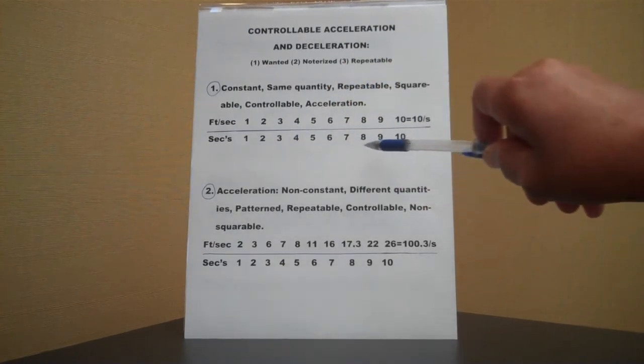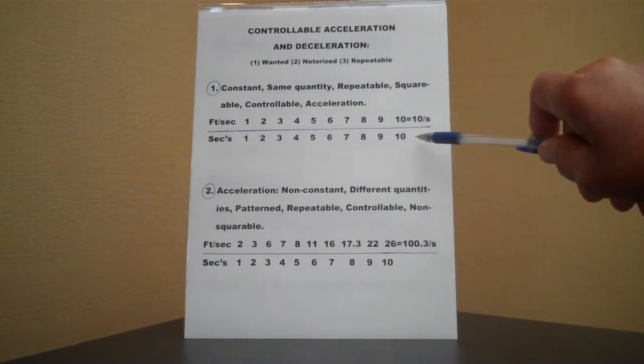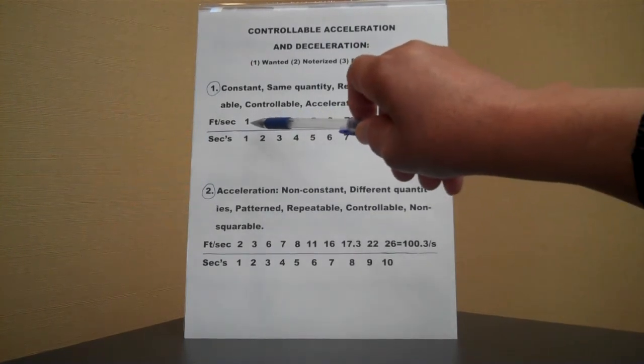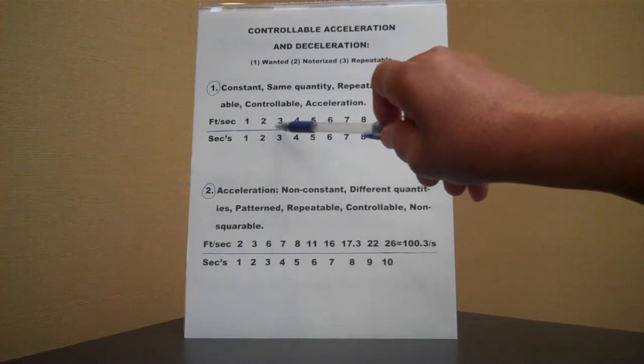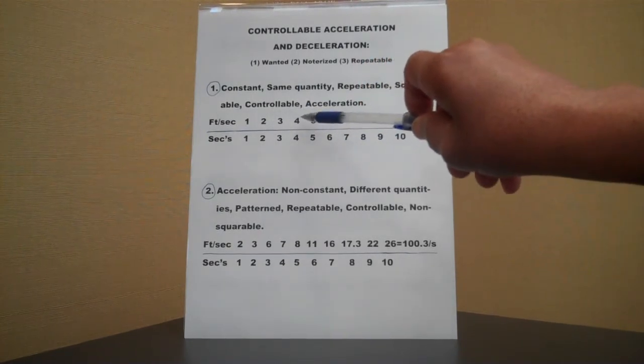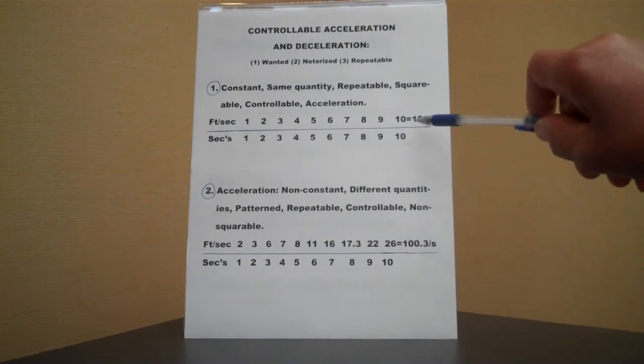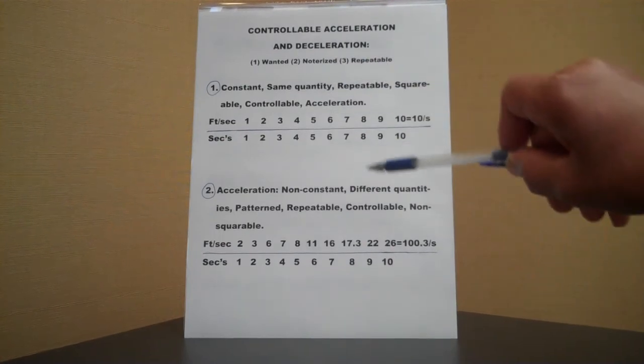One, two, three, four, five, six, seven, eight, nine, ten, ten seconds here. These are the amount of feet. They are a constant amount. Each second adds a foot. Each second adds one more foot more than the previous one. Until at the end, in ten seconds, you are moving ten feet per second.